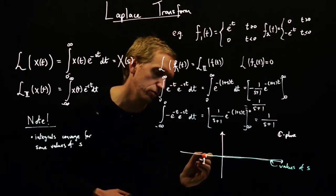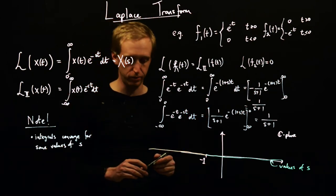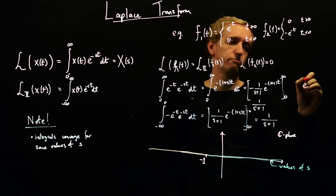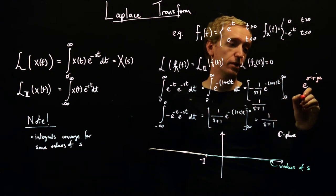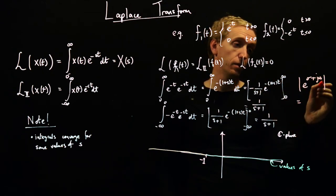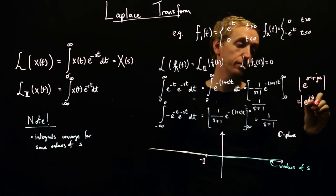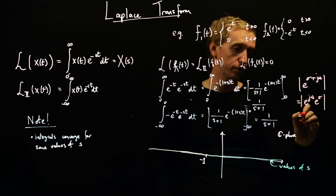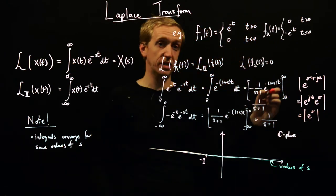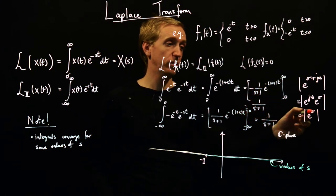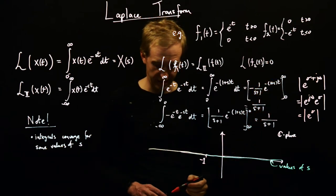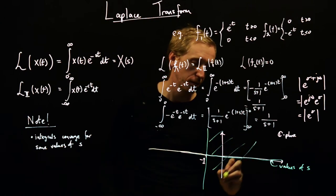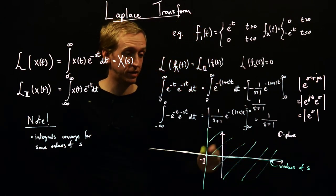What about complex values of s? If we remember, e to the power of some real number plus some imaginary number: the magnitude of this equals the magnitude of e to the jω times e to the σ. Since jω is imaginary, e to the jω is just some point on the unit circle, so its magnitude is 1. Therefore the magnitude of the expression only depends on the real part of s. That means the Laplace transform of f1 converges for all values of s whose real part is greater than minus 1 — the entire right half-plane.